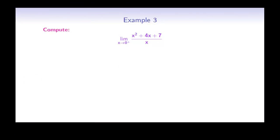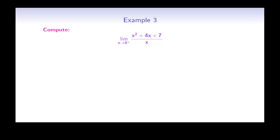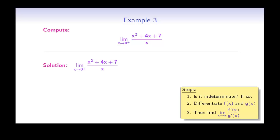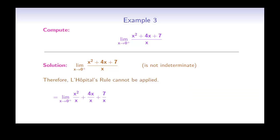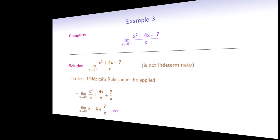Here we have the limit as x goes to 0 from the positive side of (x² + 4x + 7) divided by x. Let's check to see if this is an indeterminate form. If x approaches 0, the numerator will approach 7 and the denominator will approach 0. Therefore, we do not have an indeterminate form, and L'Hôpital's rule cannot be applied. We must find another method. For example, we can break up the quotient into three smaller quotients, and the final answer is infinity.